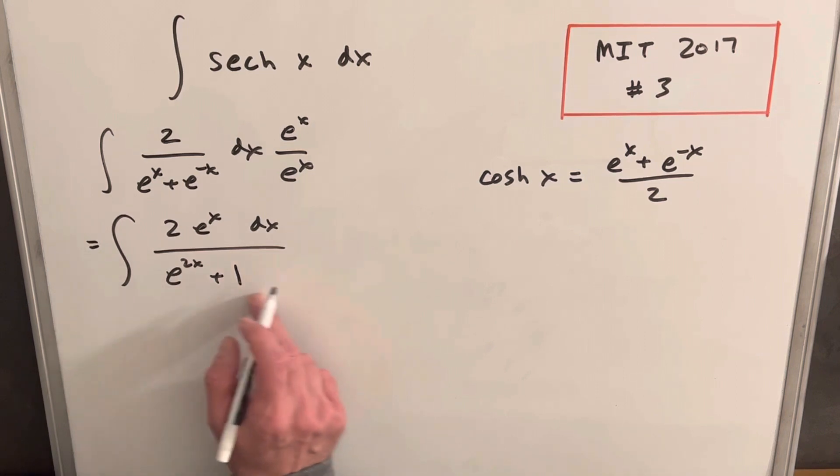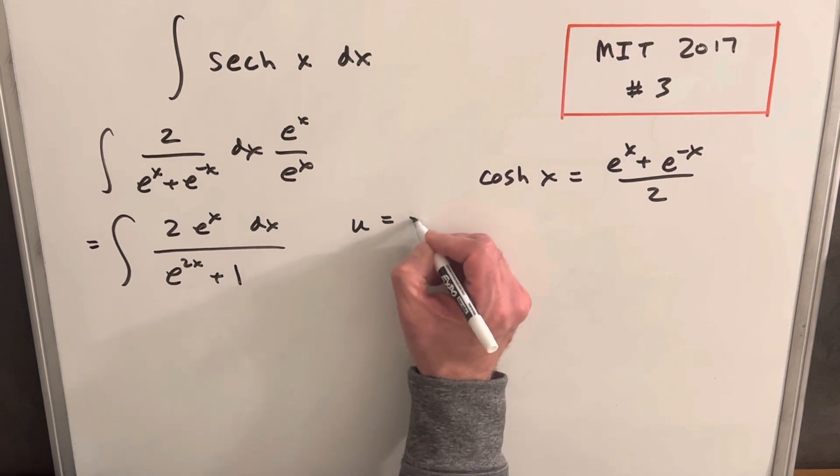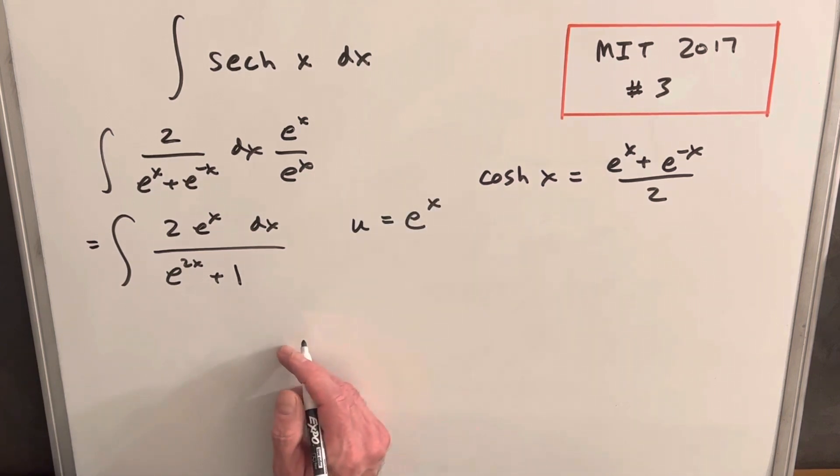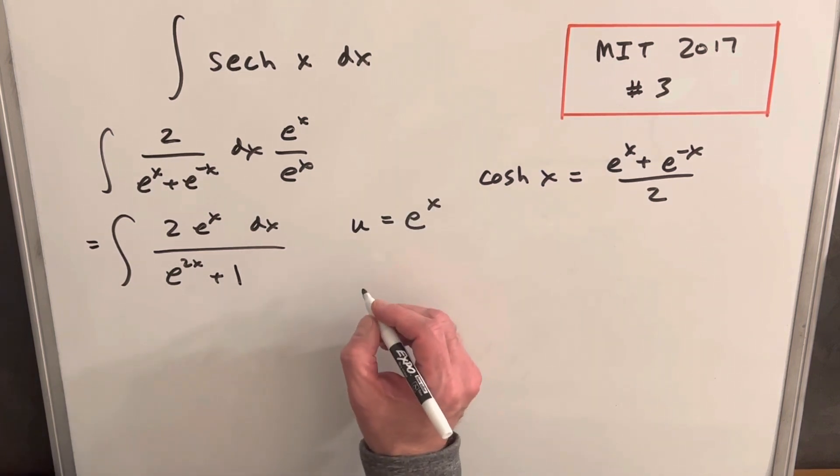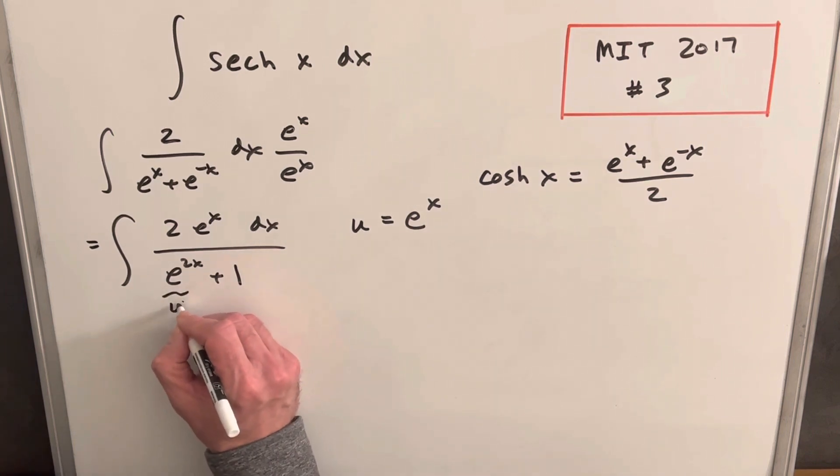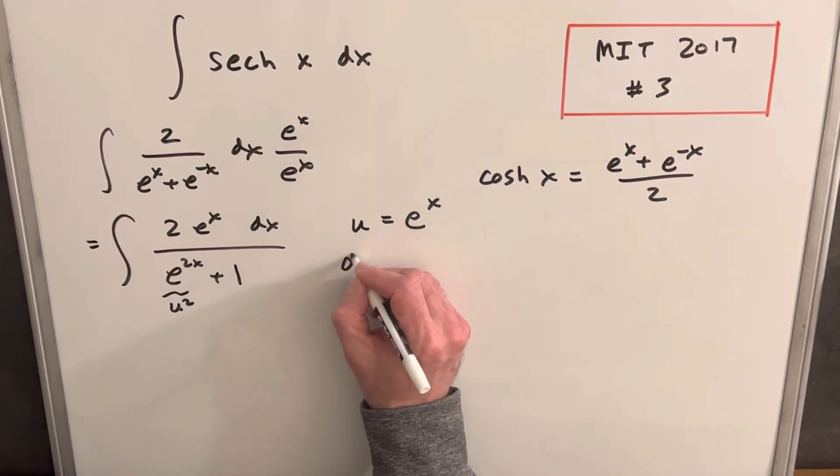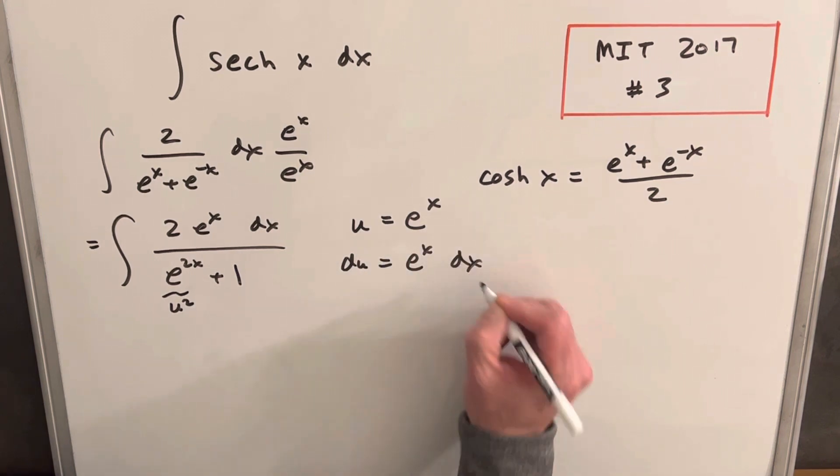Now you might think you might want to try to use everything, but it's going to work better if we just do u equal to e to the x, because then this piece here is just going to be u squared, and then our du value will just be e to the x dx.